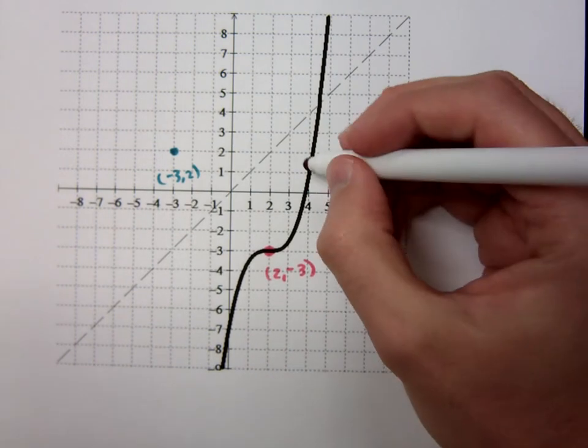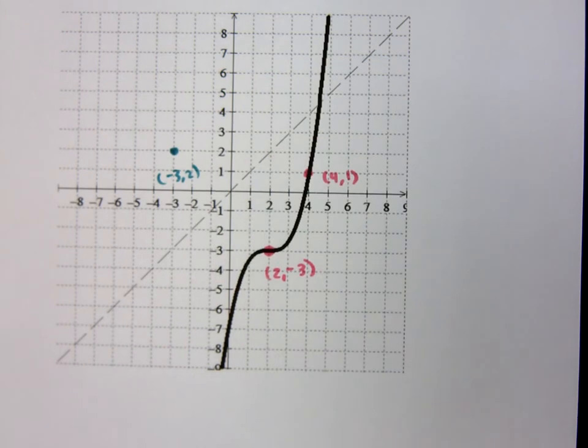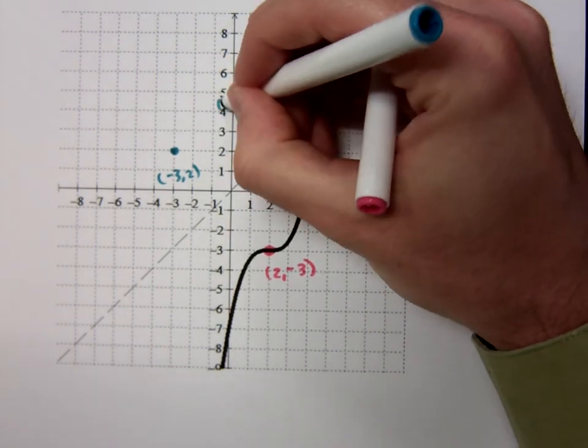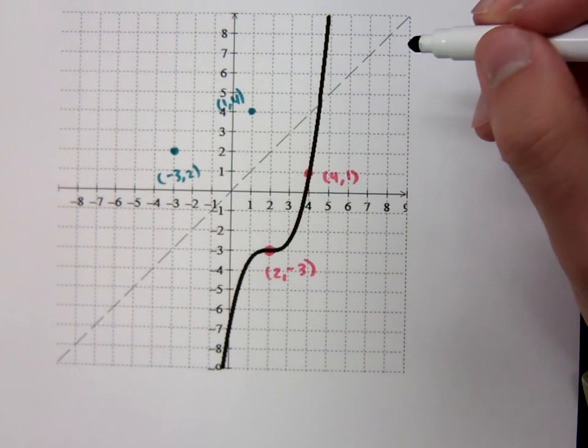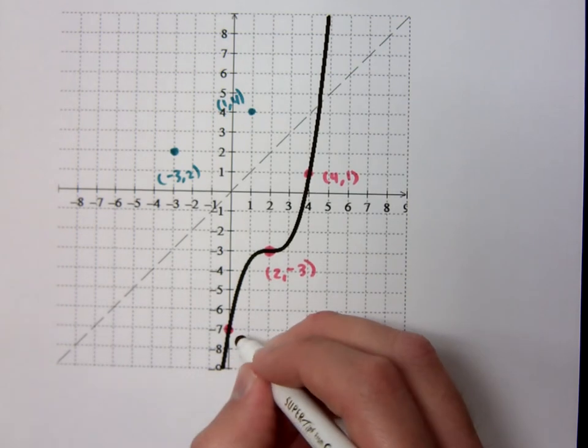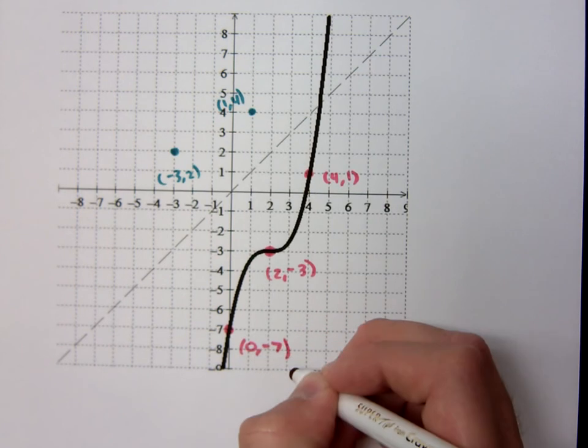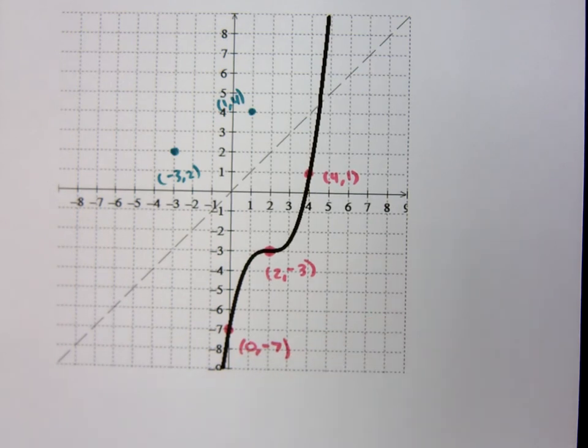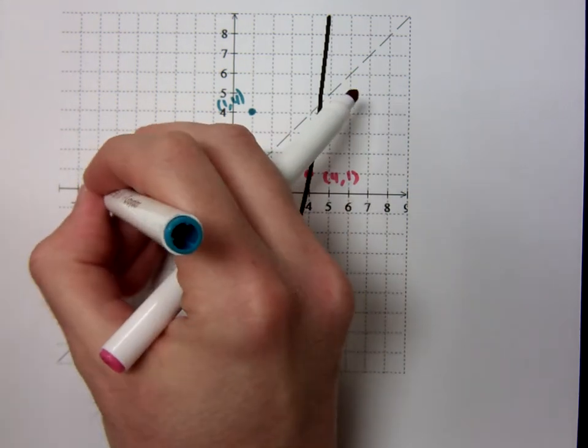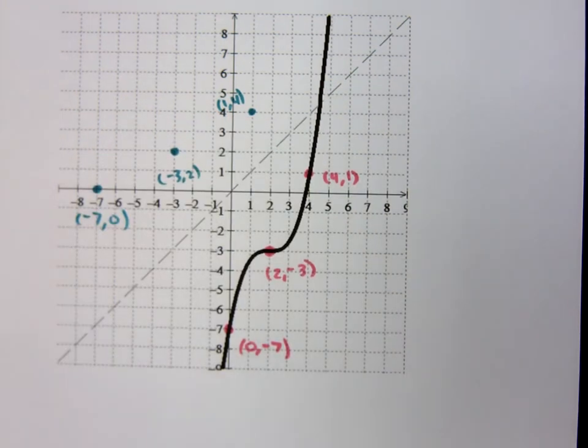I've got another nice point maybe right here at 4, 1. So, where should I be on my inverse? 1, 4. Maybe... What is this? 0, negative 7. I think that's 0, negative 7. I could be wrong. Sometimes I am.